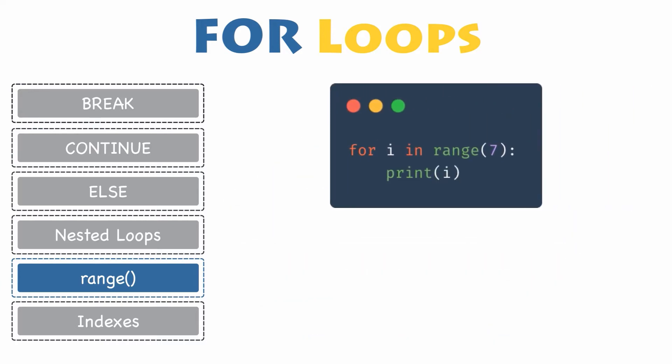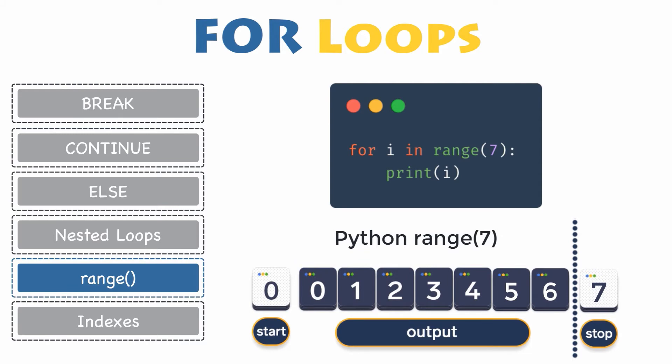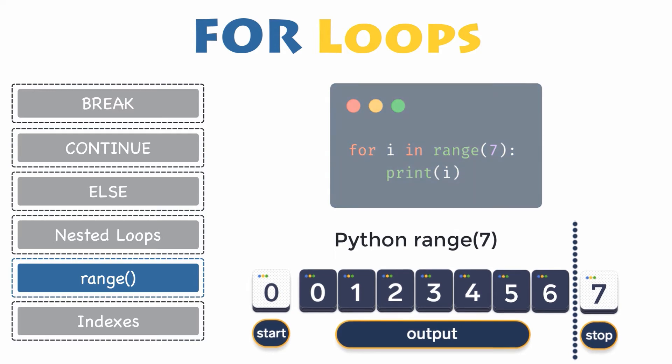Let's take a look at how the range function can be used with a for loop. For i in range(7), print i. In the above example, the sequence starts from 0 and ends at 6 because the ending parameter is 7 and is not included. The default step is 1 if not provided. Therefore, the for loop jumps one step for each new iteration and will result in printing out all the numbers from 0 through 6 included.